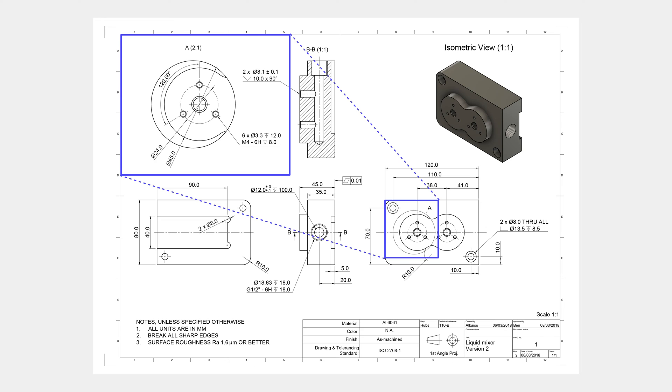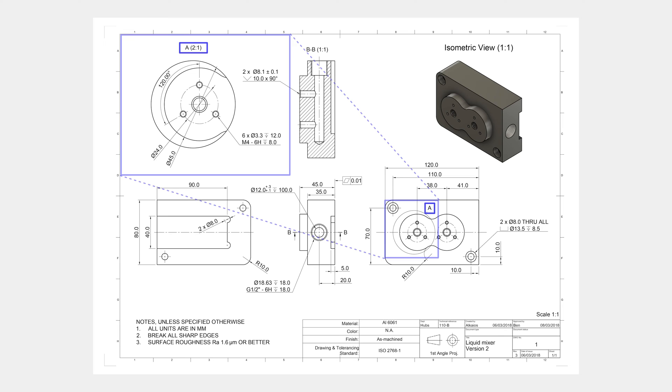Fifth, the detail views. Detail views are used to highlight complex or difficult-to-dimension areas of a part as seen on the main orthographic view. They are typically circular in shape and are noted with a single letter that links the detail view with the main drawing — for example, A, B, and so on. Detail views can be placed anywhere on the drawing.